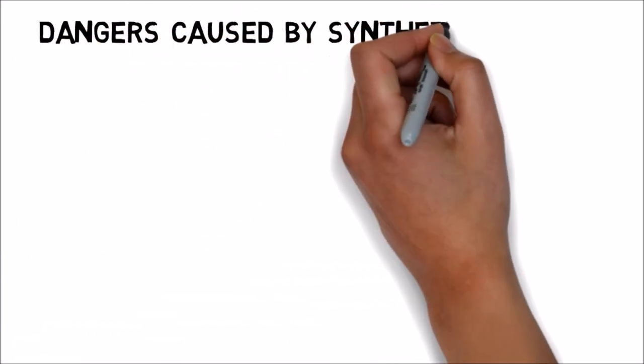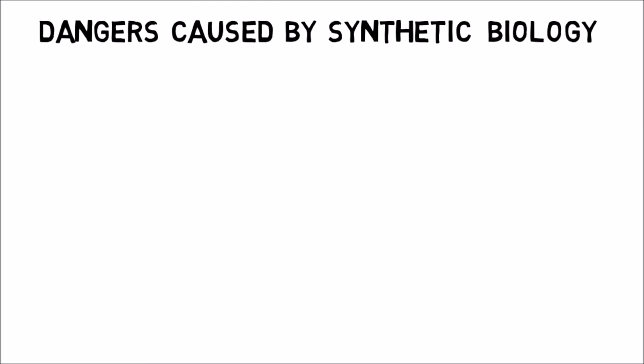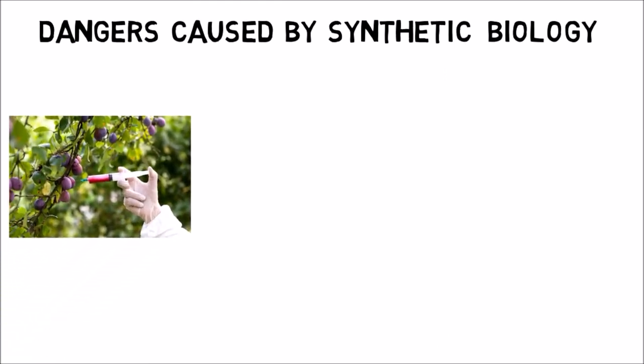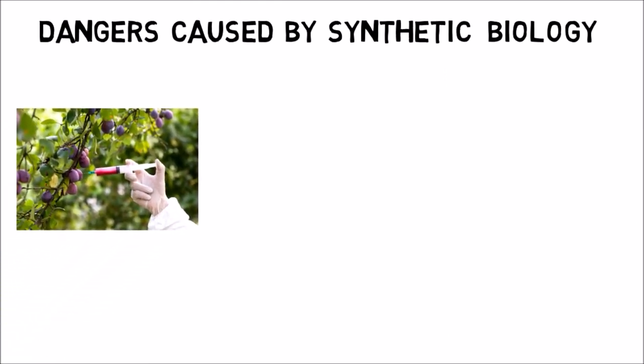Dangers caused by synthetic biology. Risk to the environment. Regardless of whether a synthetically produced organism is discharged accidentally from a lab or deliberately into nature, the risk to our biological system is the same. Since the far-reaching utilization of genetically built crops, we have seen that these plants can share qualities crosswise over species, evolve and transform after some time, and radically influence whole biological ecosystem.